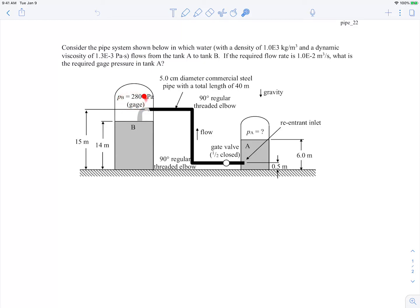Tank B has some internal pressure here at the surface of 280 kilopascals gauge pressure. So there's some high pressure here that's forcing the water to go through the pipe. We're told that if the required flow rate is about 1 times 10 to the minus 2 cubic meters per second, what is the required gauge pressure in the tank here? So what is this PA going to be? We're given some elevations, reentrant inlet, half-closed gate valve, threaded 90-degree elbows, the pipe diameter. It's made out of commercial steel, and the total length, and then also some information about the exit elevations.